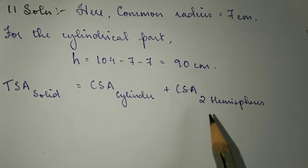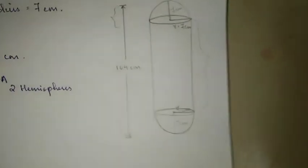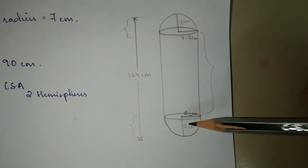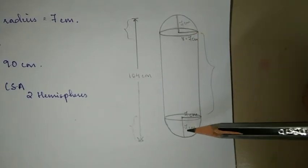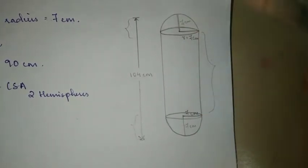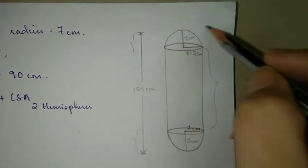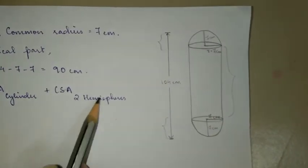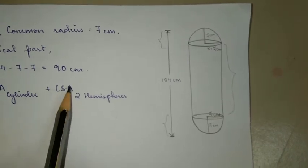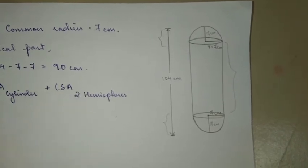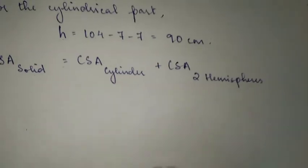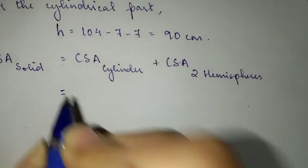The total surface area of the solid will be equal to the curved surface area of the cylinder plus the curved surface area of two hemispheres. One thing I want you to know is that two hemispheres joined together make one sphere, so instead of writing curved surface area of two hemispheres, you can also say surface area of sphere and you will get the same answer.